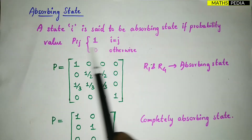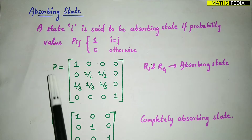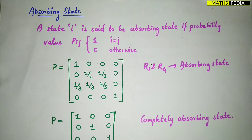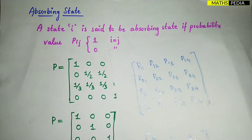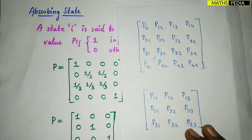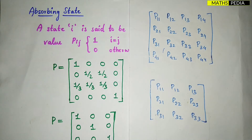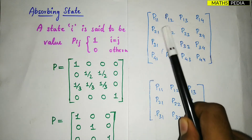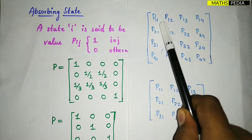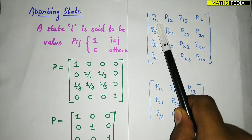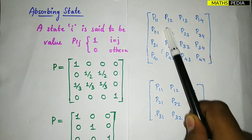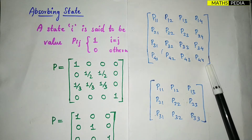Here we have one example of a P matrix. Let me show you how to compare these values. We have the elements which we can name as P11, P12, P13, P14, and so on till P44.